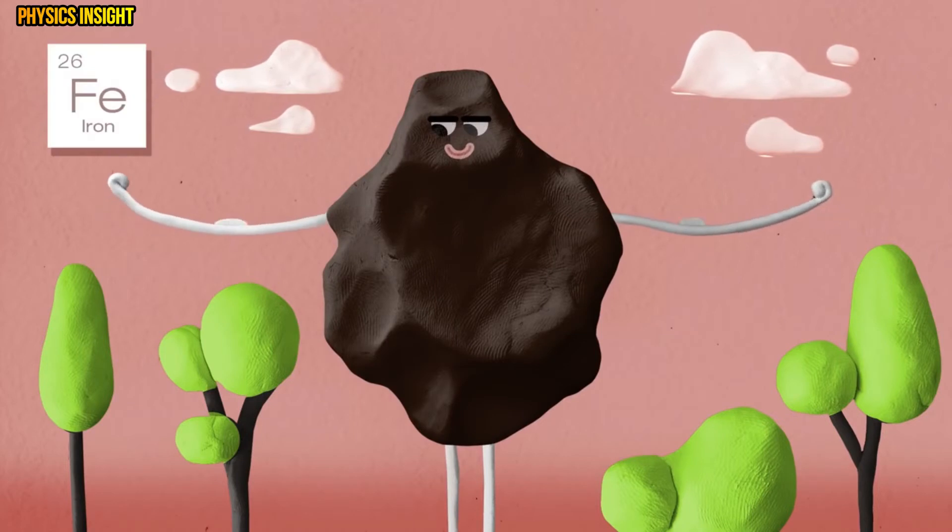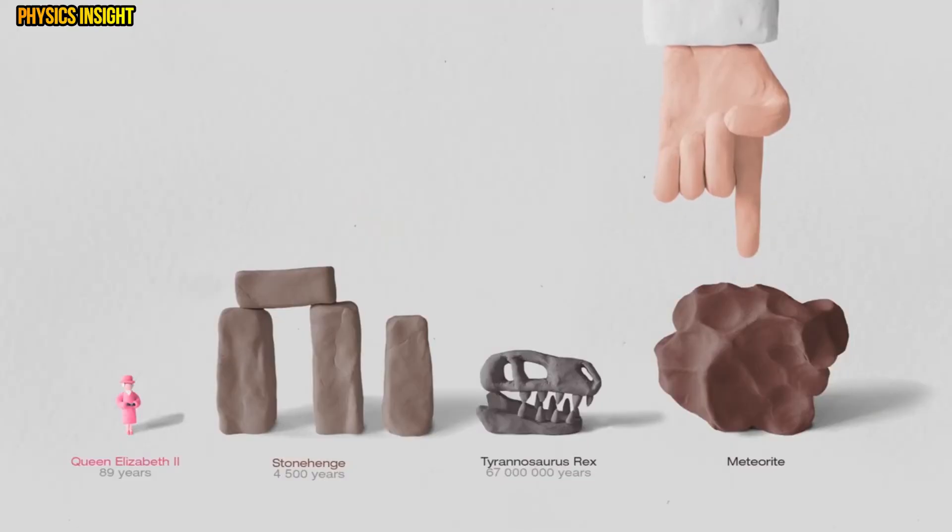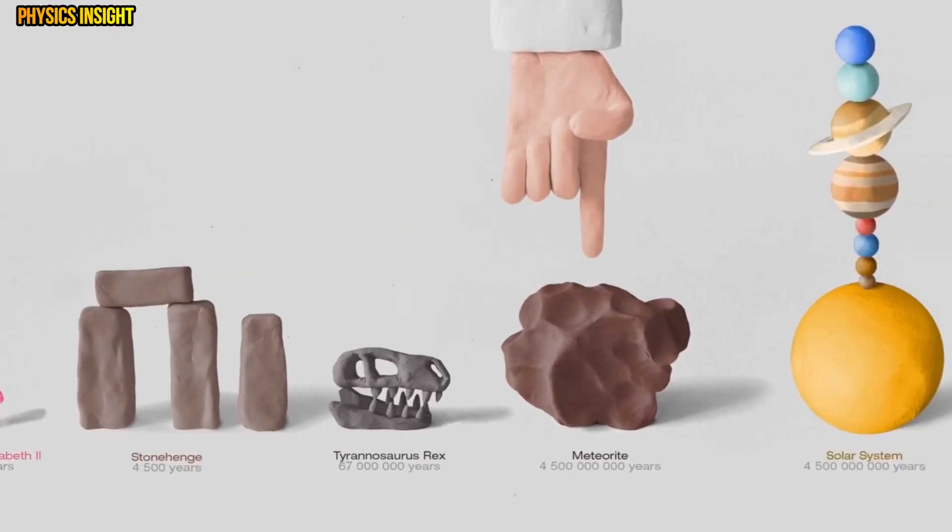Some meteorites contain iron which makes them very dense, dark and magnetic. They are the oldest thing you could ever touch as they are the same age as the solar system.